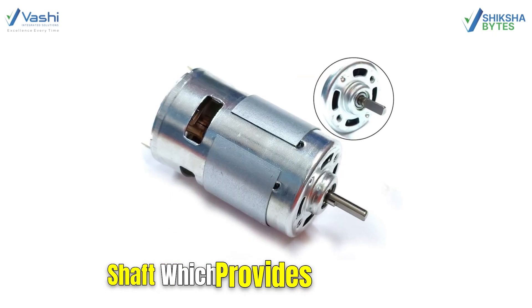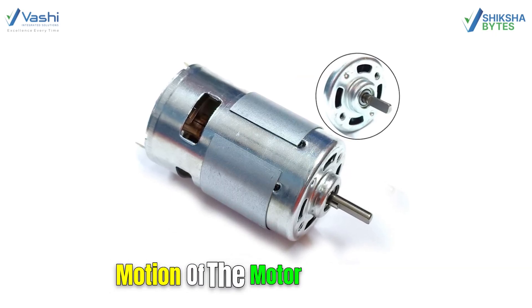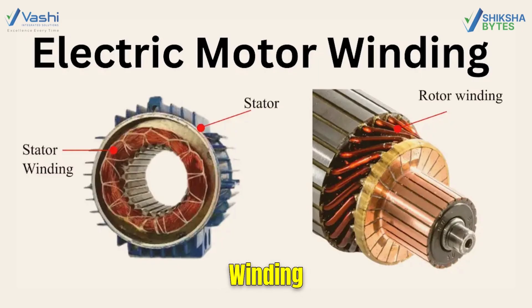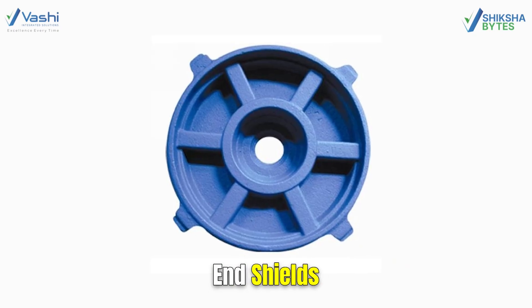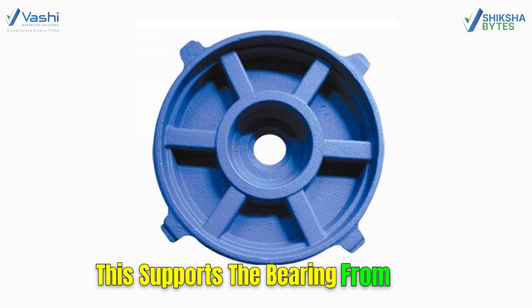Shaft, which provides the rotating motion of the motor to the load. Winding, the copper coil in the motor which provides the magnetic field. End shields, which support the bearing from both sides.